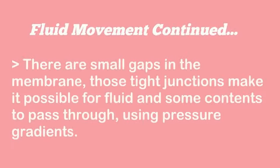There are small gaps in the membrane. These tight junctions make it possible for fluid and some contents to pass through using pressure gradients. Ultimately, fluid movement among compartments depends on different variables, as described in the Starling equation.